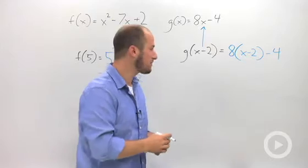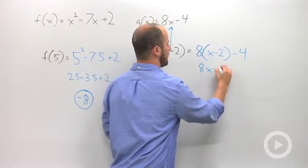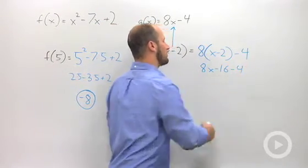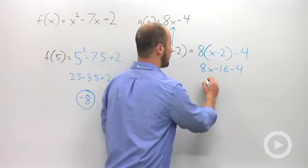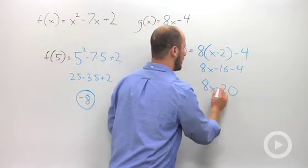Okay, we can simplify this up. This just turns into 8x minus 16 minus 4. Combining like terms leaves us with 8x minus 20.